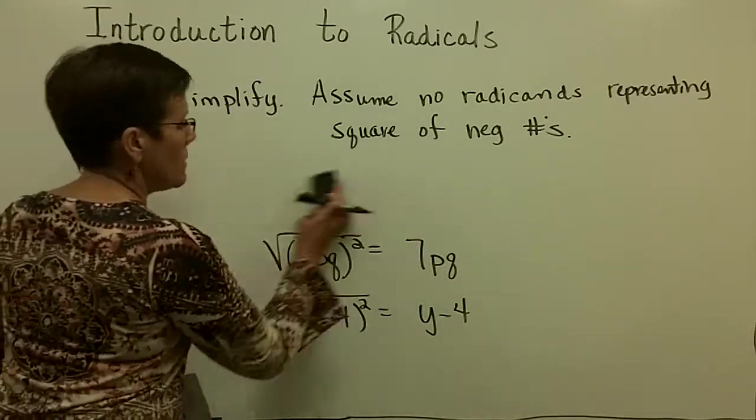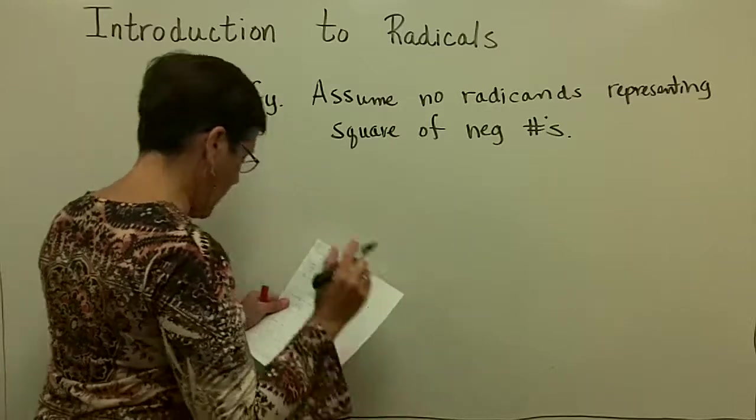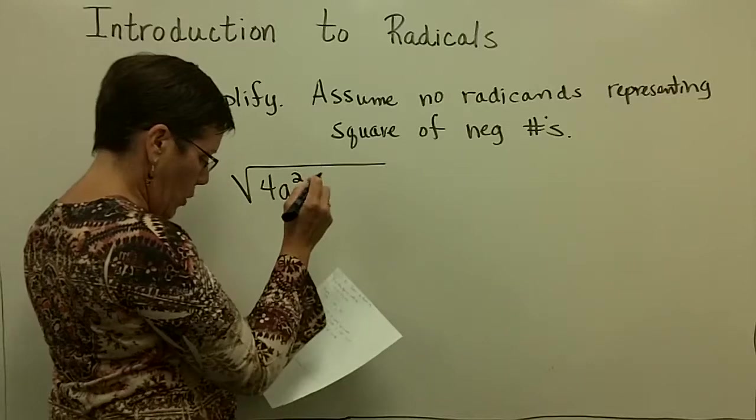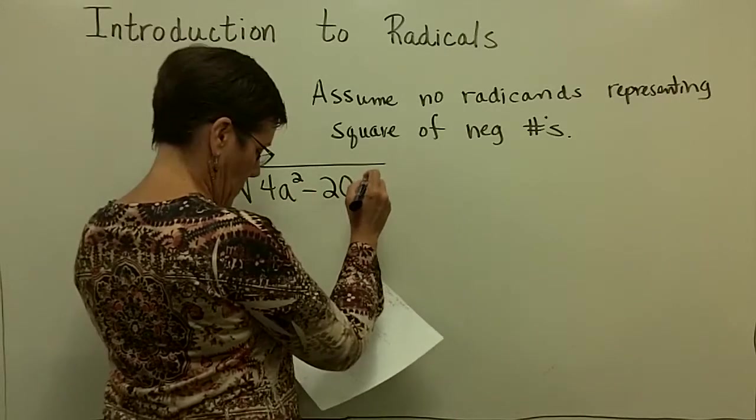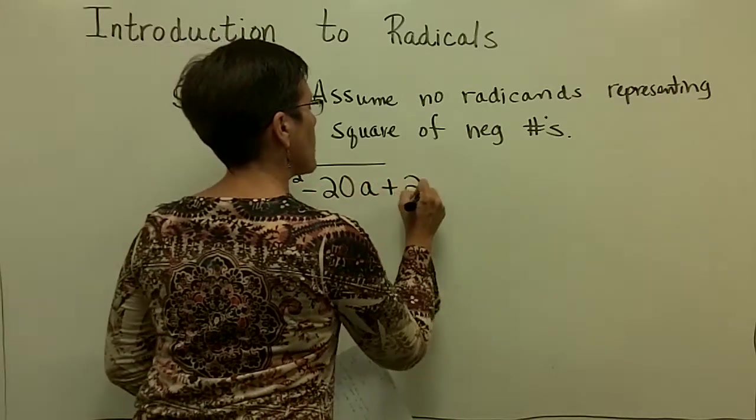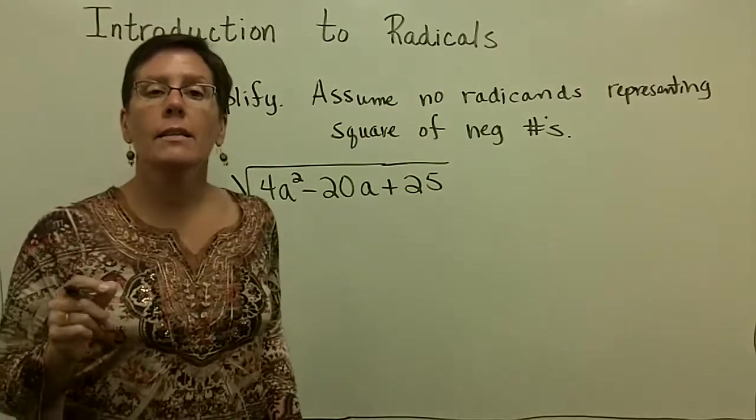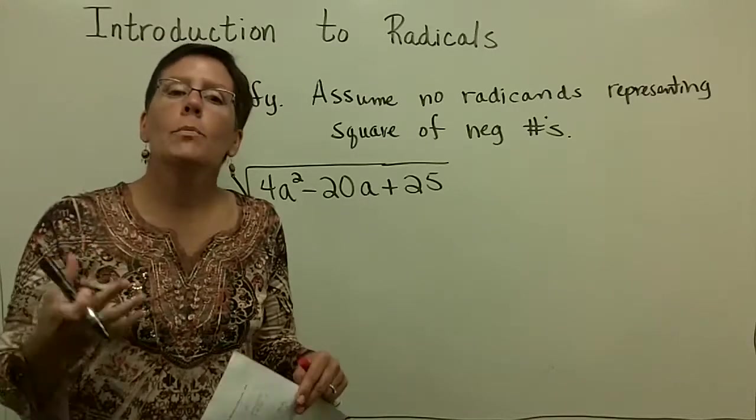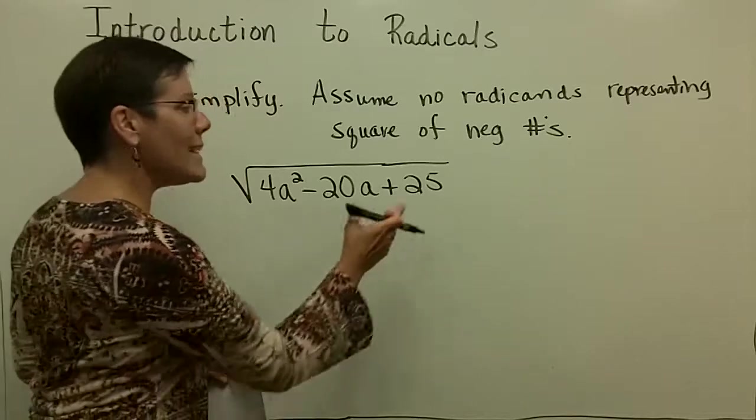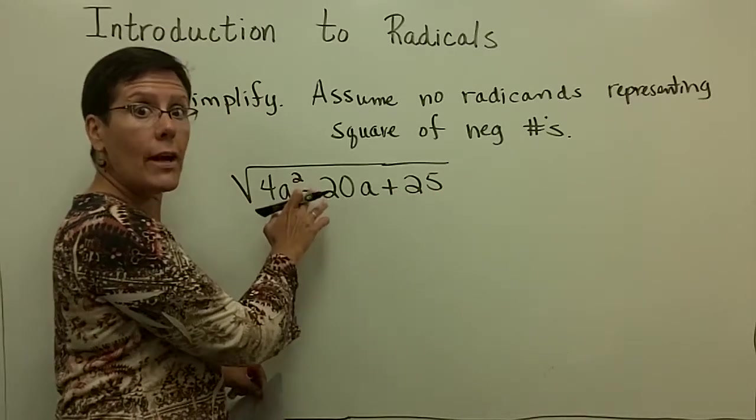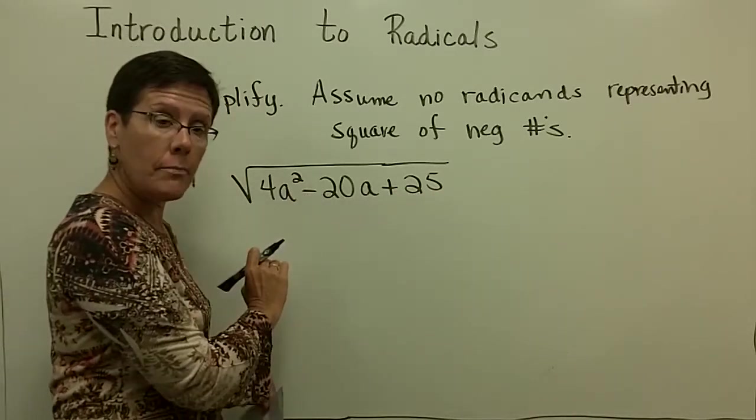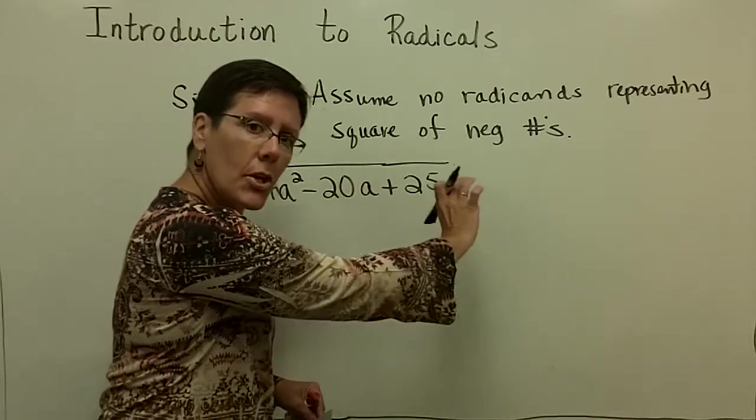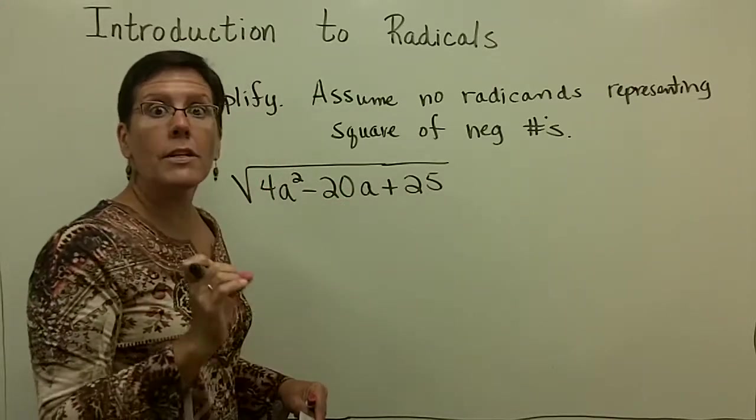Finally, one last problem. Similar topic. You may be asked to simplify an expression like this. An algebraic expression, a trinomial for the radicand. And this cannot be simplified unless you factor it. Because we have to turn it into a binomial squared in order to be able to take the square root of it. I cannot just say, oh look, there's a 4a squared here. I can call the square root of that 2a. Or, oh look, there's a 25. I can call the square root of that 5. These are three terms under the radical. There are not a bunch of factors.